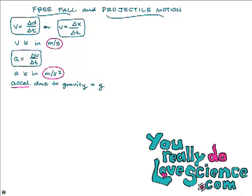On earth, we know the value for little g: it's 9.8, or some teachers say 9.81 meters per second squared. That's a constant on earth. Technically, if you went to the top of Mount Everest, you're farther from the center of the earth so g is just a little bit lower, but just accept that 9.81 is pretty much the average acceleration due to gravity on earth.